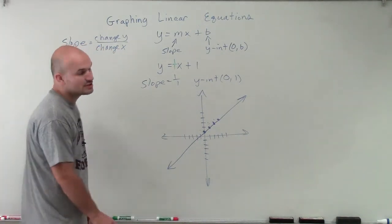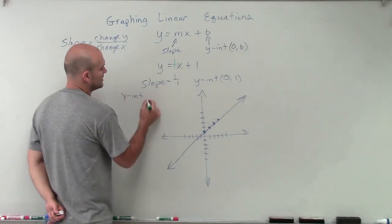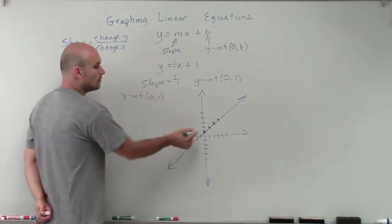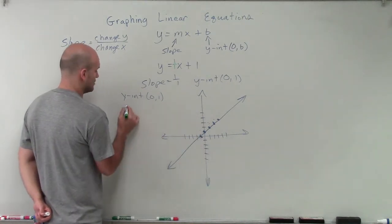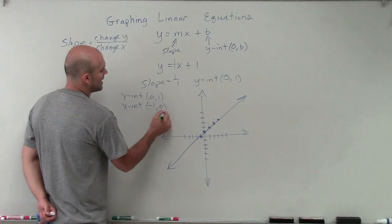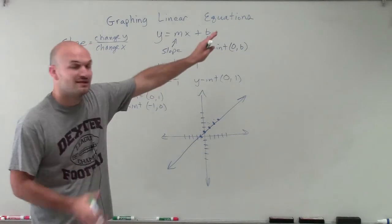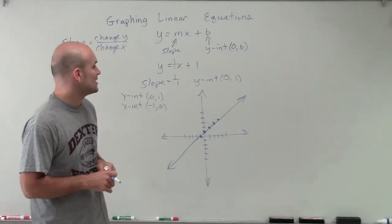So by looking at this line, there's a couple things that we notice. We do have a y-intercept, which we already determined was 0, 1. We also have an x-intercept, where the graph crosses the x-axis at negative 1, 0. And there is not going to be any max or minimum, because this graph is going to continue indefinitely in the positive and in the negative direction.